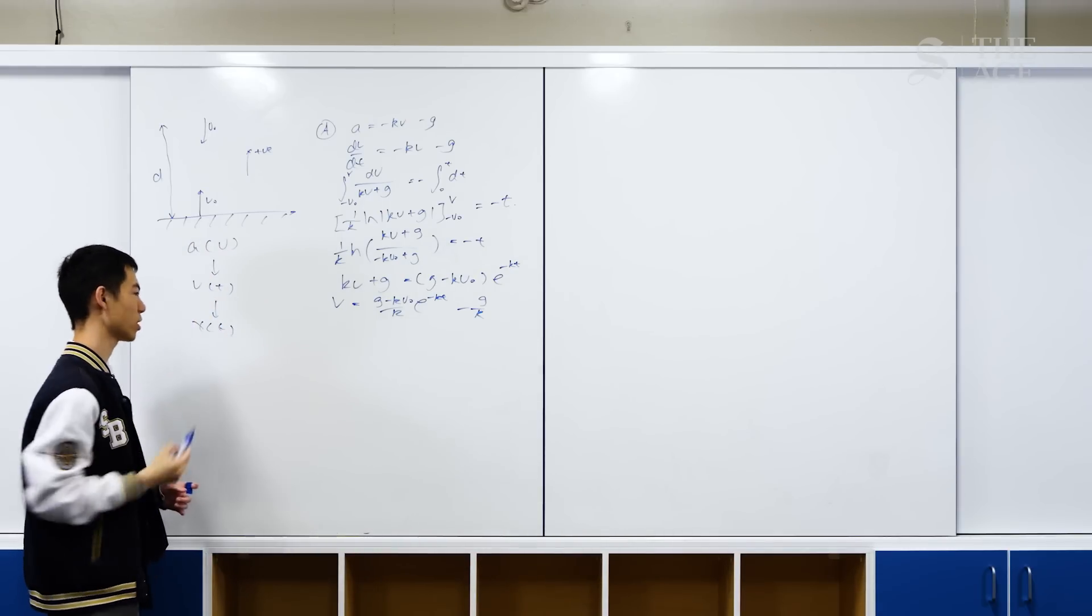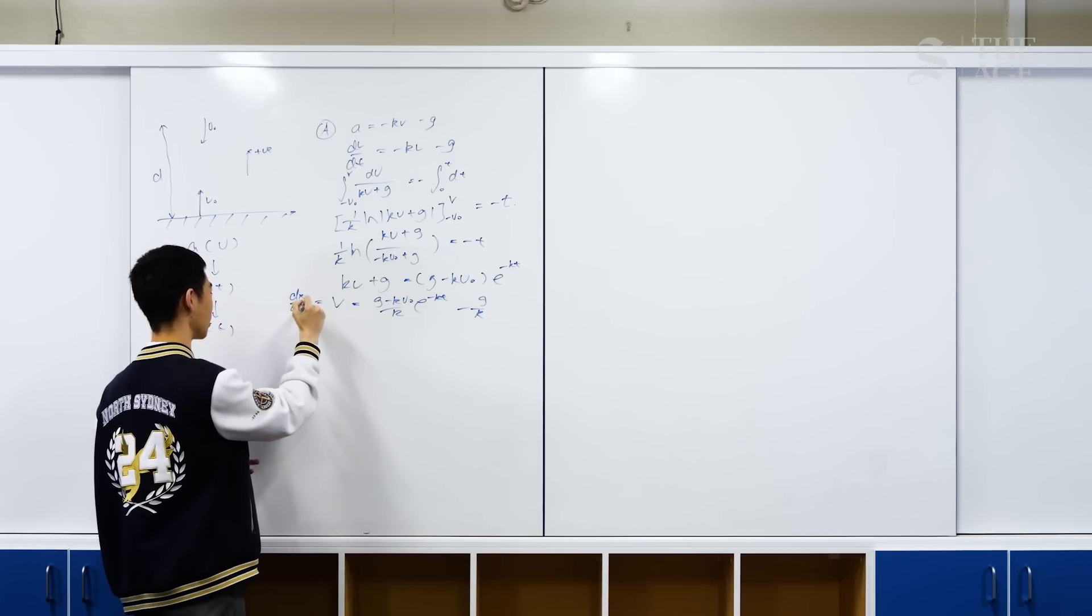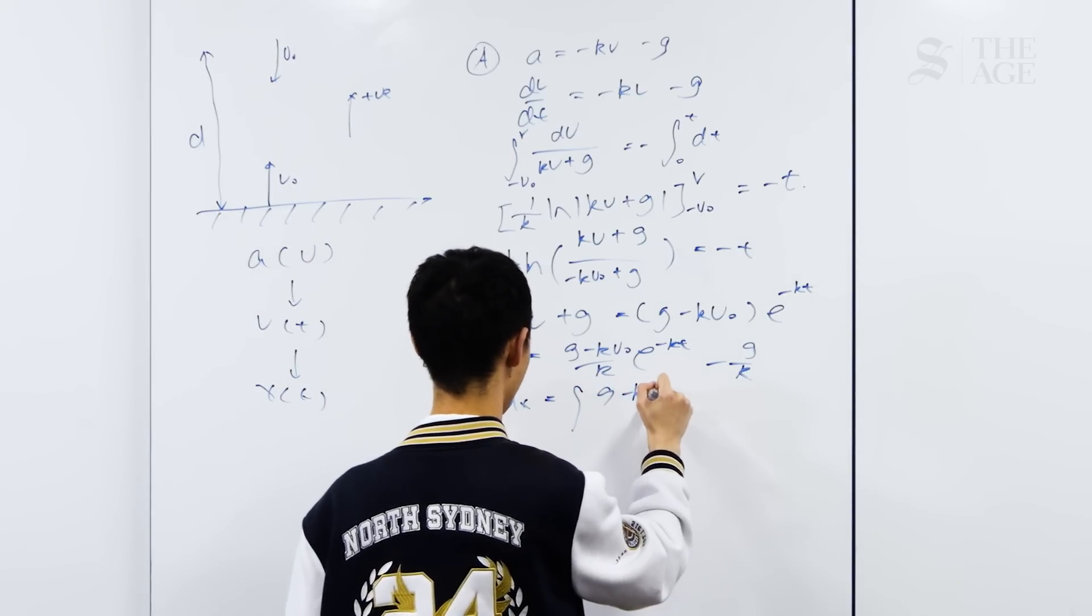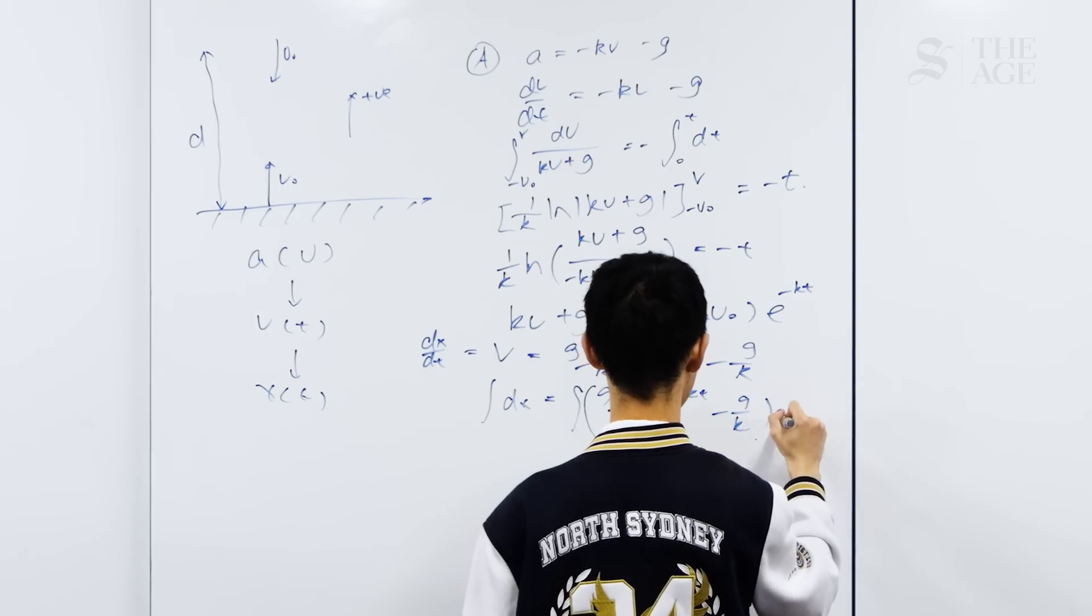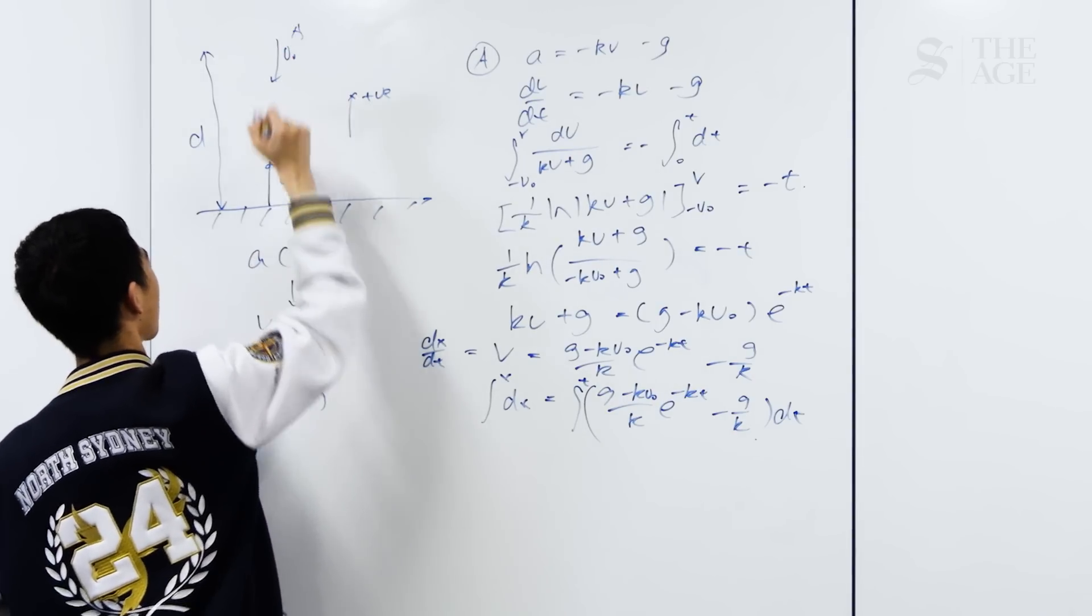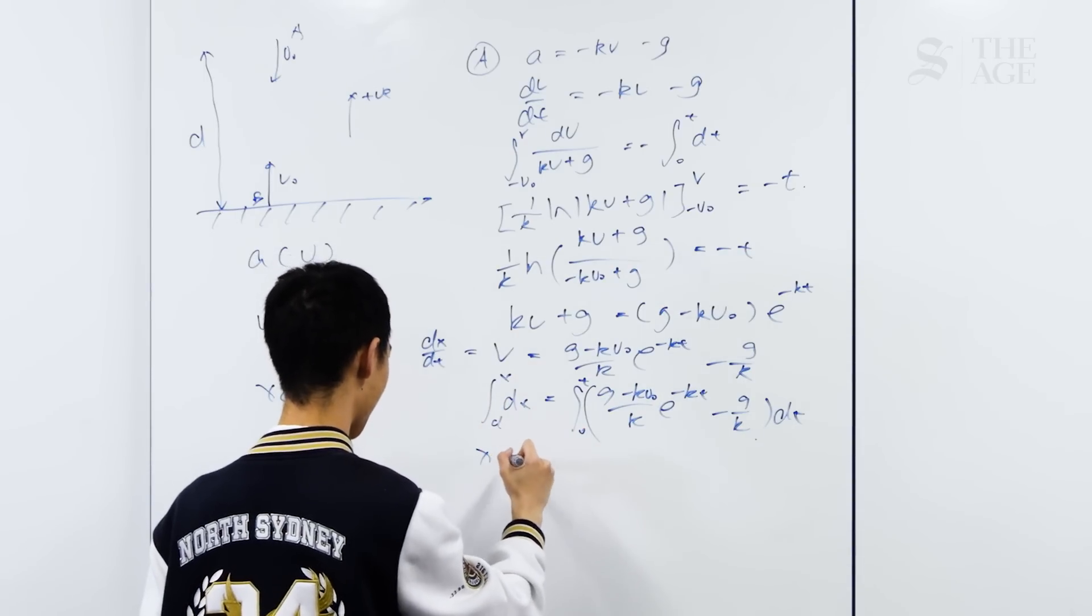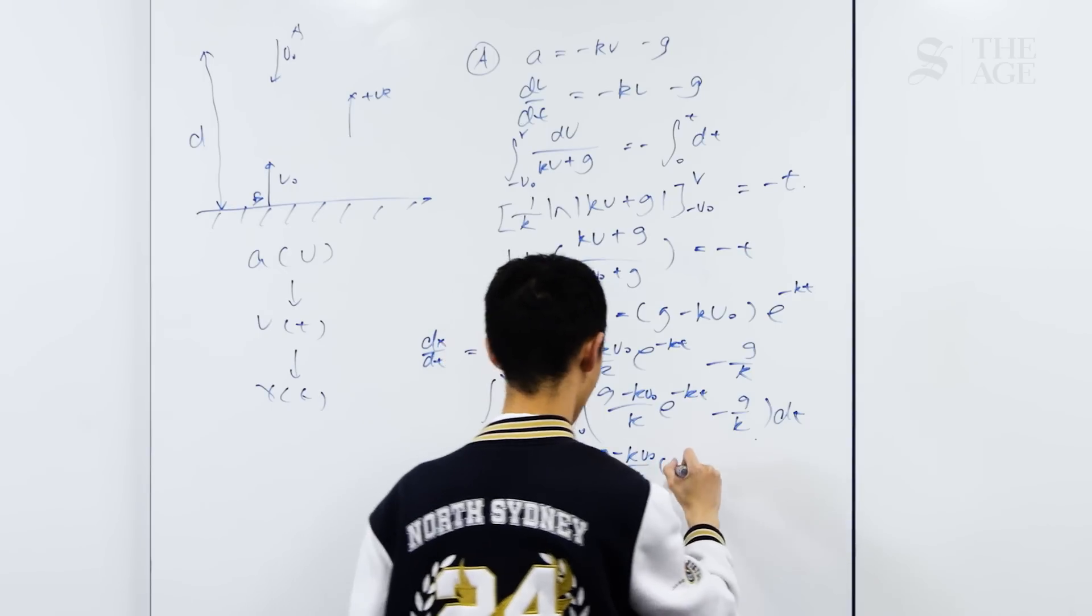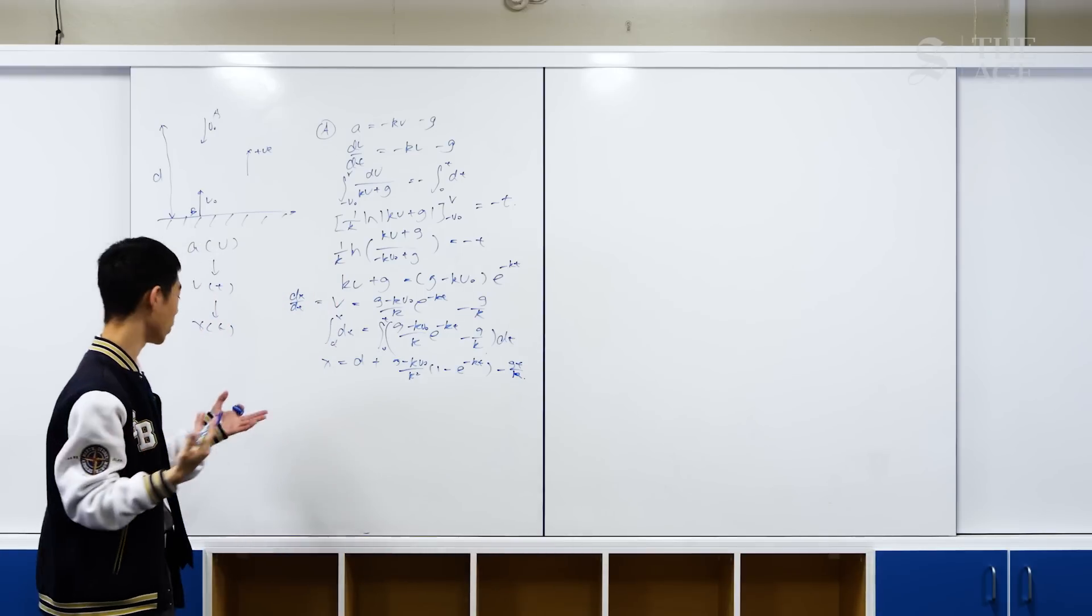As we keep going, we have v as a function of t. Now we want x as a function of t. Here we again use the equation v equals dx/dt. So we have integrate dx equals [(g - kv0)/k]e^(-kt) - g/k dt. Subbing in the bounds again, for the first particle, particle A, we initially have it in the air. So we want the bound to be d in the air when time is zero. Now we can do the integral. x equals d + [(g - kv0)/k²](1 - e^(-kt)) - gt/k. That's the displacement equation for the first particle.